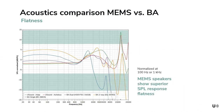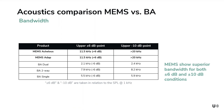Regarding SPL response flatness: normalized at 1 kHz with boundaries at ±6 dB, the MEMS loudspeaker (green and red curves) stays perfectly within the defined ±6 dB limits from 20 Hz to 20 kHz — which is not the case for balanced armature. The upper ±6 dB and ±10 dB bandwidth points of MEMS loudspeakers are definitely superior to balanced armature, whether single or dual driver.